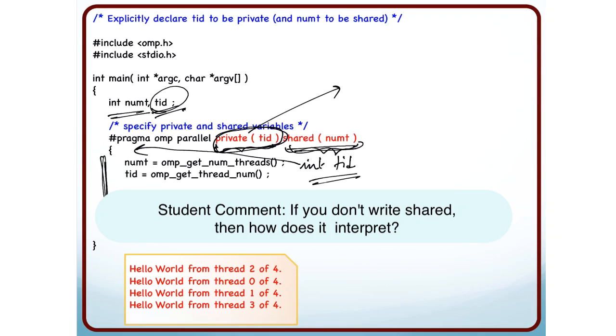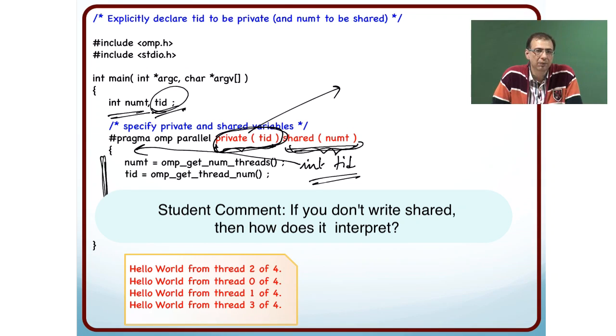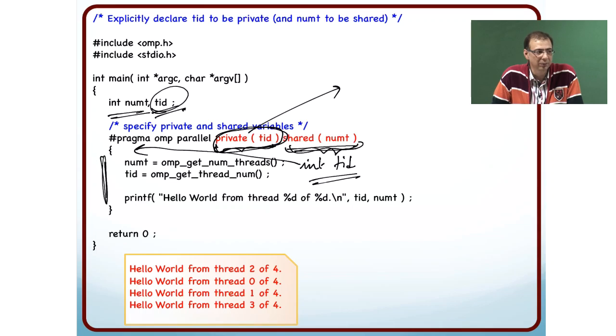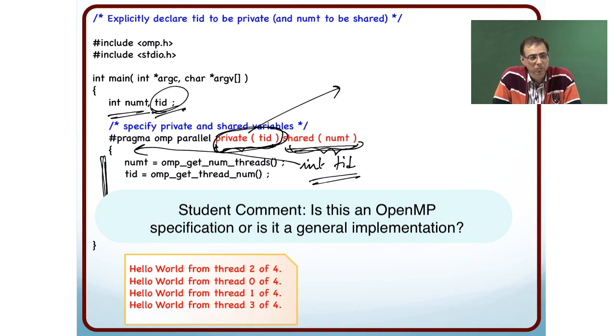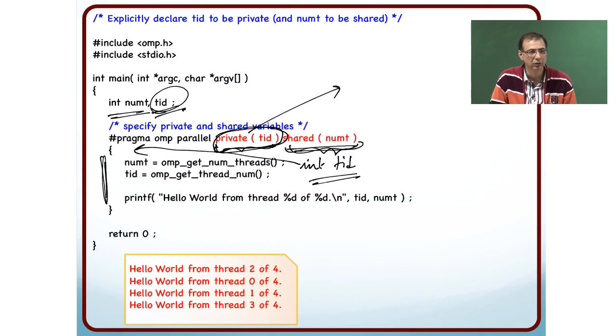Then it comes down to what is the default behavior? For any variable for which you do not specify the scope, what is the default behavior? In OpenMP, we will come to that, the default behavior is shared. If you are using a variable which is declared outside but used inside a parallel region, and you have not specified the scope in the parallel region, then it is treated as shared. This is the OpenMP specification, so every compiler has to adhere to this.